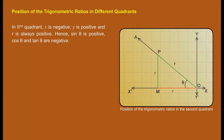In the second quadrant, x is negative, y is positive, and r is always positive. Hence, sin theta is positive, while cos theta and tan theta are negative. Sin theta equals y upon r, cos theta equals minus x upon r, and tan theta equals y upon minus x.